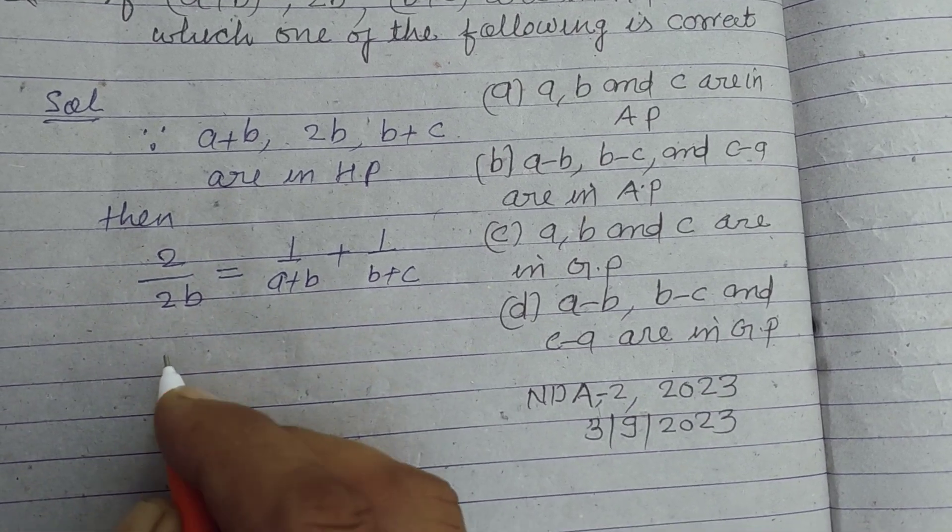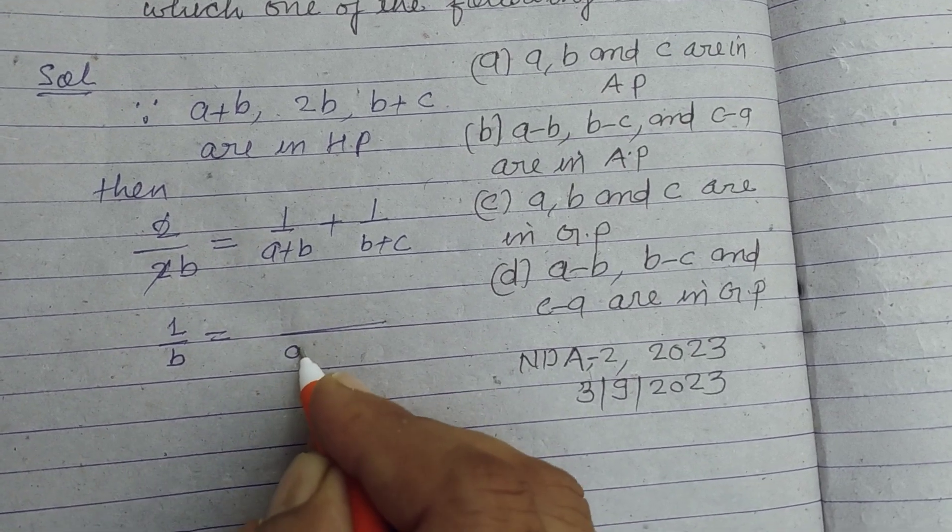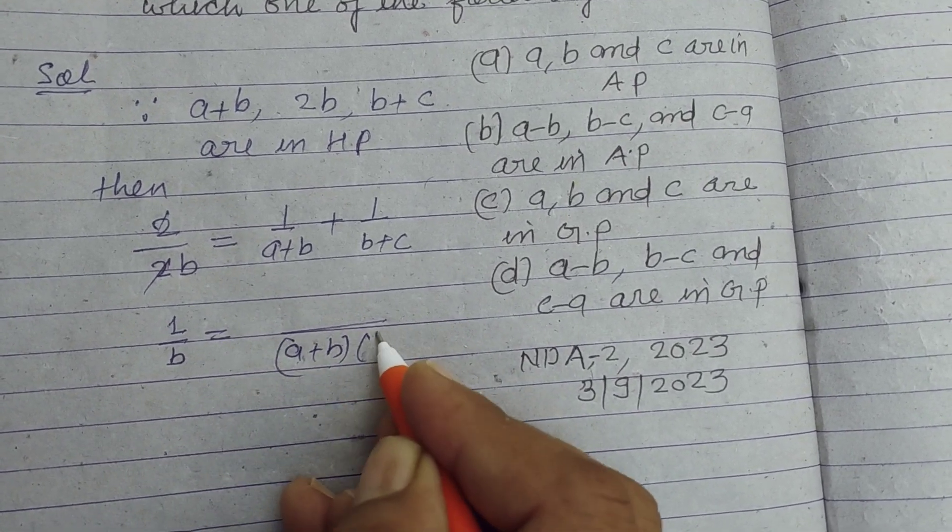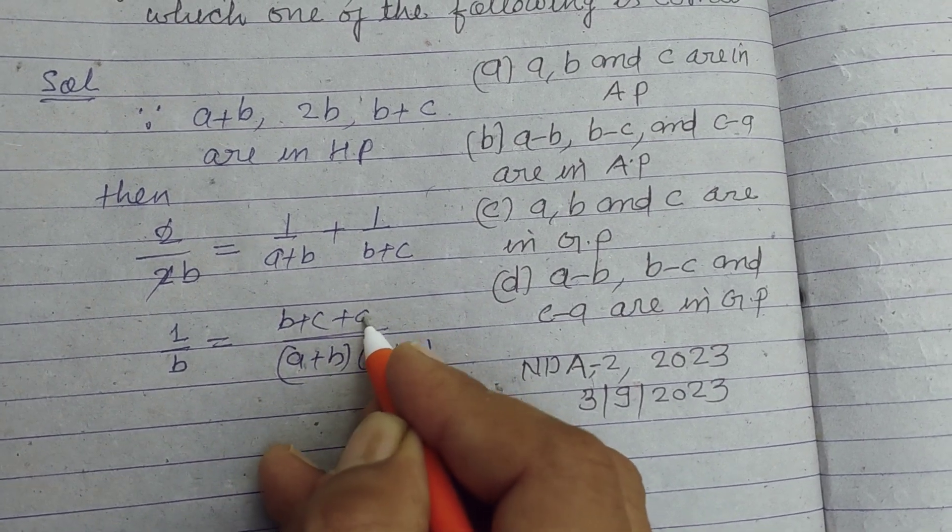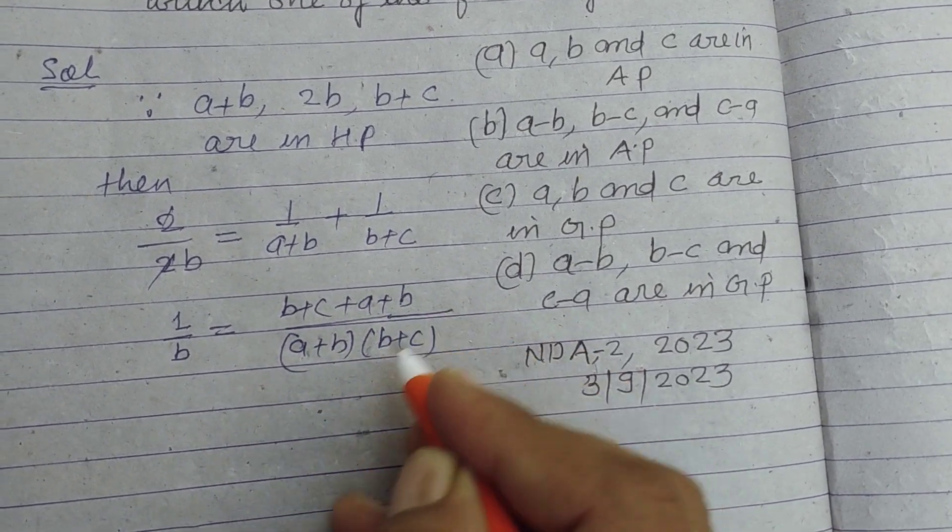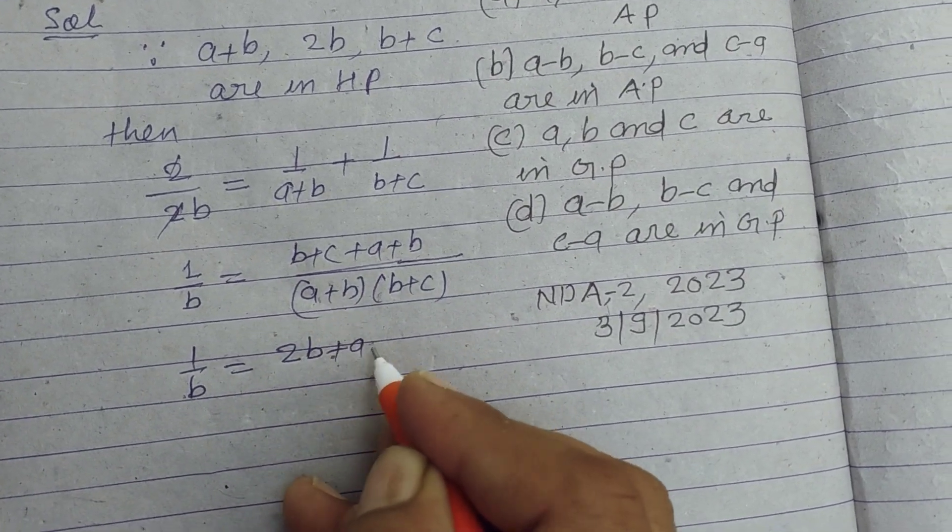So simplifying this, this is 1 upon b. This is LCM (a+b) into (b+c), here b+c plus a+b. So 1 upon b equals 2b plus a plus c.